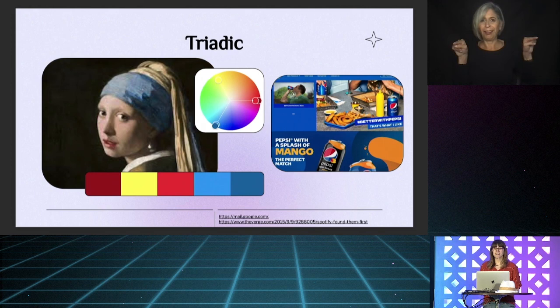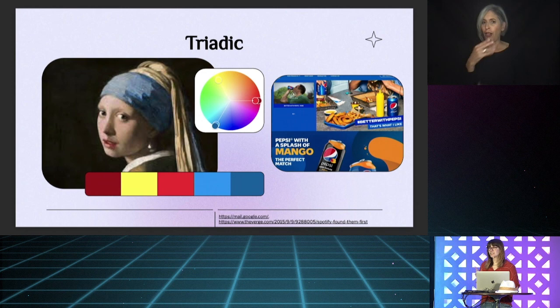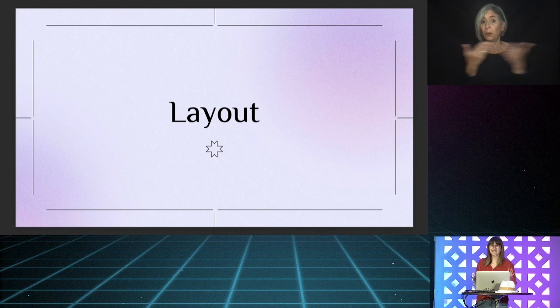Last on our list is triadic. This color scheme has three main colors equally spaced from each other, creating a triangle across the color wheel. Vermeer's 'Girl with the Pearl Earring' uses this color scheme — you can see it with her red lips, her blue wrap, and the yellow clothing. In a less fine art example, we can take a look at the Pepsi website. Yellow is not one of their official brand colors, but you can tell someone knew their color theory, because yellow is very naturally incorporated in all their photos and accent colors, and it really brings the whole design together.